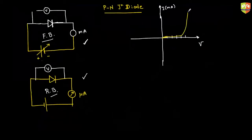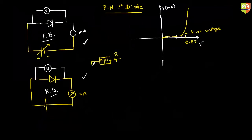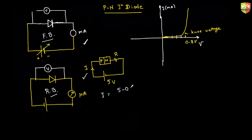Let's say I have a diode — P side and N side — with a resistance R connected in series, and a supply of 5 volts. Can you guess the current? The PN junction acts like a reverse voltage of 0.7 volts, so the current equals 5 minus 0.7, divided by R.